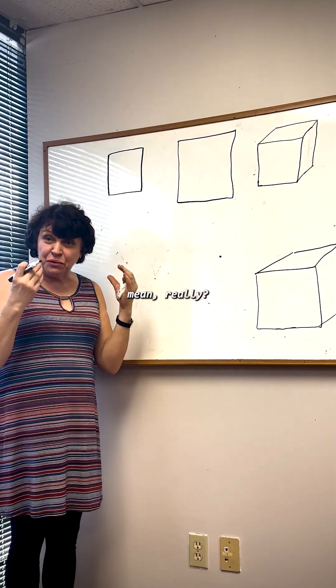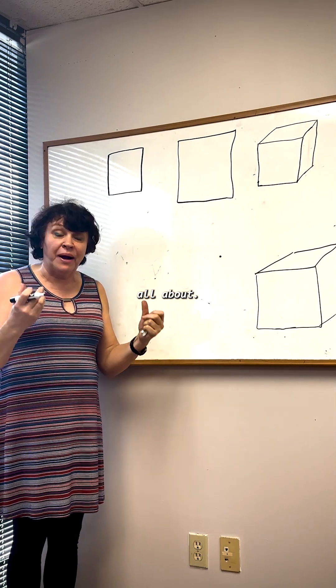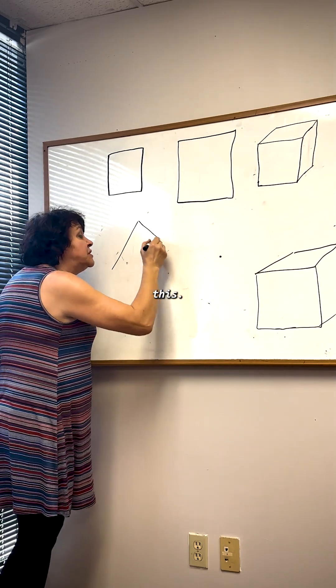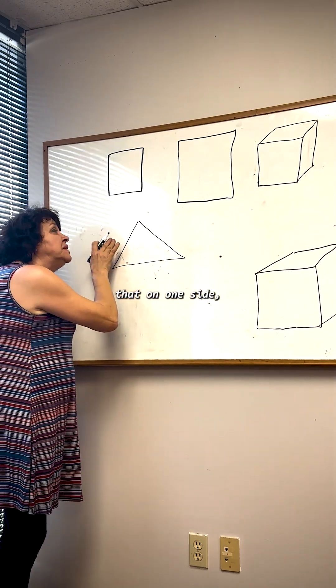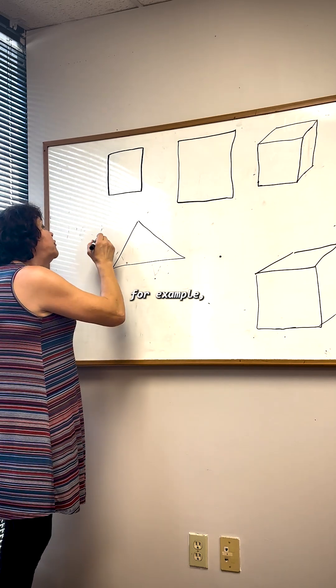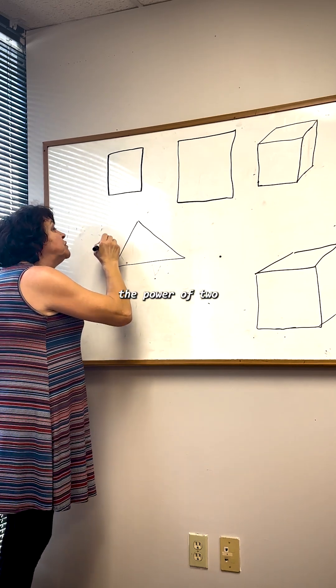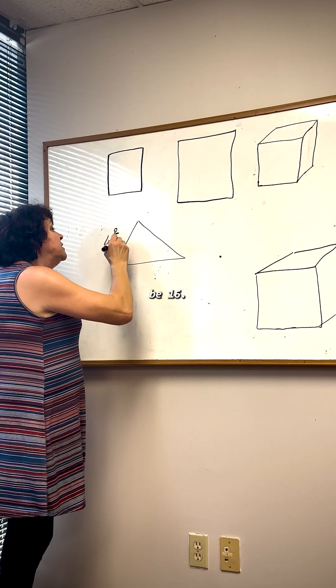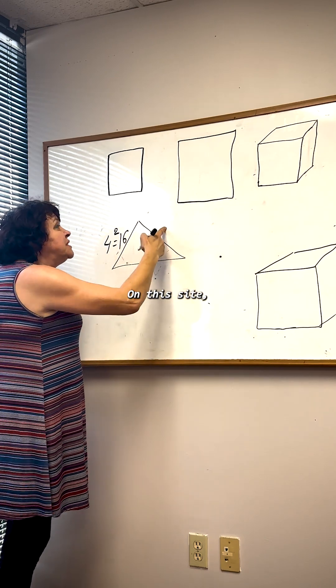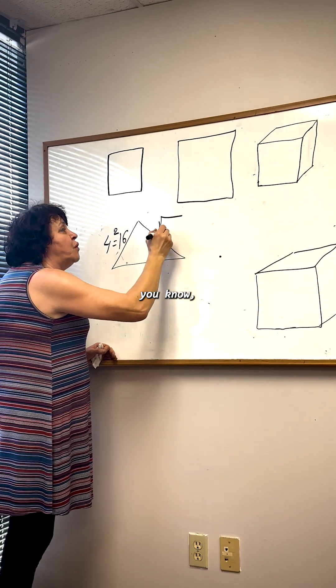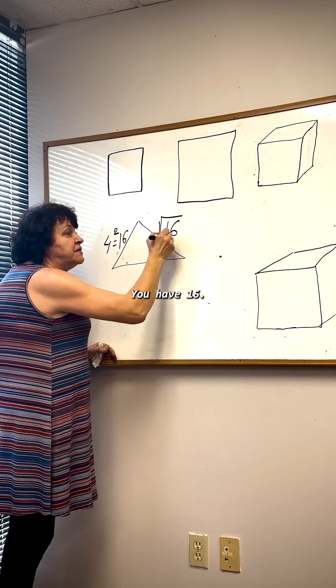Now we can understand what logarithm is all about. You have this triangle. On one side, you bring it to the power, for example, 4 to the power of 2. What is that going to be? 16. On this side, for example, you have 16.